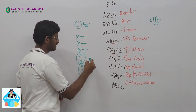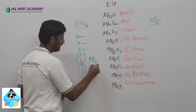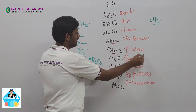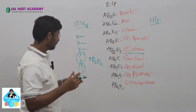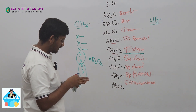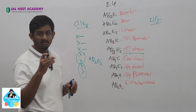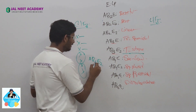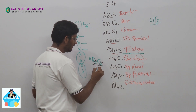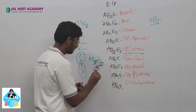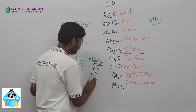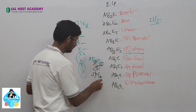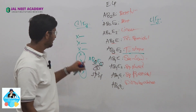Let's work out ClF₃. Chlorine has 3 bond pairs and 2 lone pairs, so this is AB₃E₂, which is T-shaped. Now for hybridization: bond pairs plus lone pairs equals 3 plus 2 equals 5. Hybridization number is 5, which is sp³d. So what is the hybridization of ClF₃? It is sp³d.